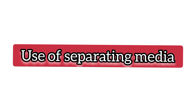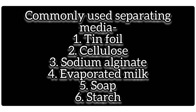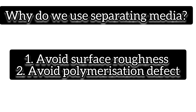The next step is to apply the separating media — applied between the resin and gypsum, that is between the gypsum pour and the denture base. Commonly used separating media include tinfoil, cellulose, sodium alginate, sodium silicate, evaporated milk, soap, and starches. Separating media is used to avoid surface roughness: excess monomer can escape into the gypsum causing roughness, and excess water from gypsum can penetrate the resin causing polymerization defects. Sodium alginate is most commonly used.